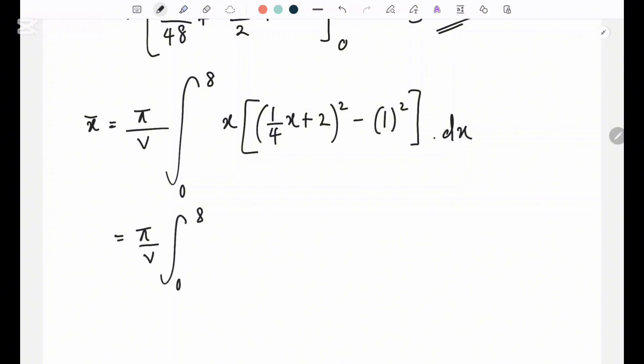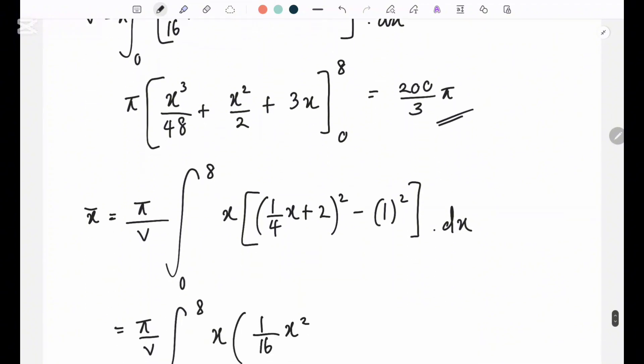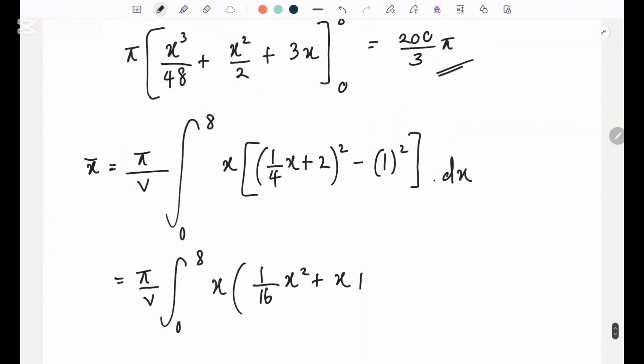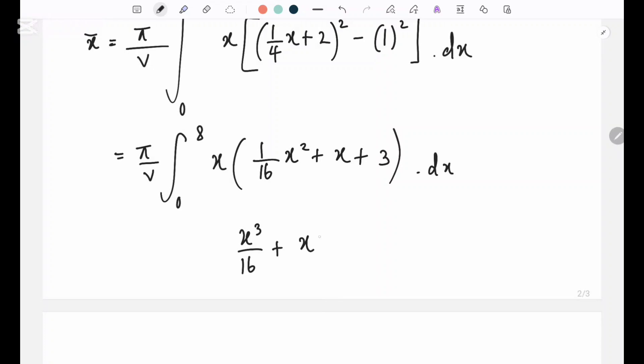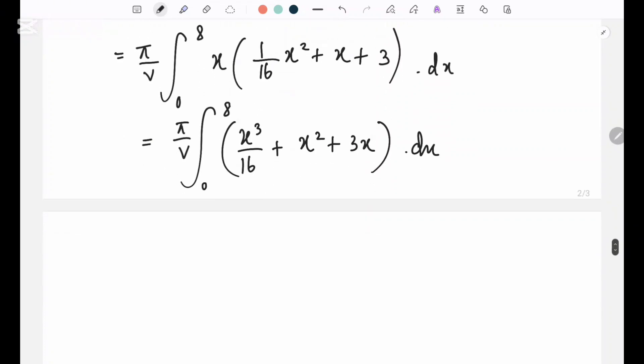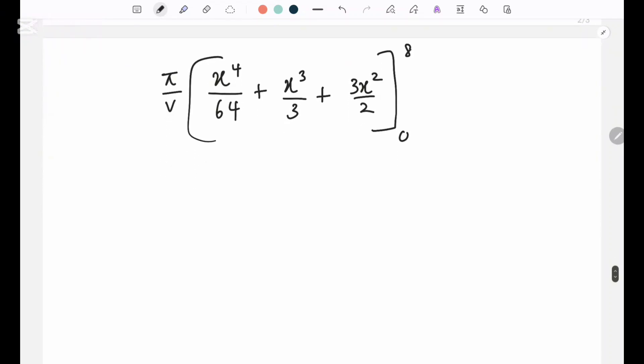So 0 to 8, we previously had x into the expansion was 1 over 16 x squared plus x plus 4 minus 1. We can just straight away put it as 3. So now let's expand the brackets. So we have x to the power 3 over 16 plus x squared plus 3x. Now we have to integrate. x to the power 4 over 64, plus x to the power 3 over 3, plus 3x squared over 2. I'll put in the integrals now. Let's leave it as pi over v. We can do the substitution at the end. So I'm going to use my calculator again.